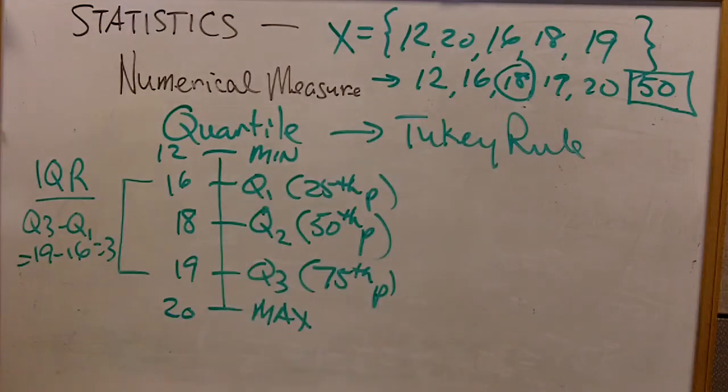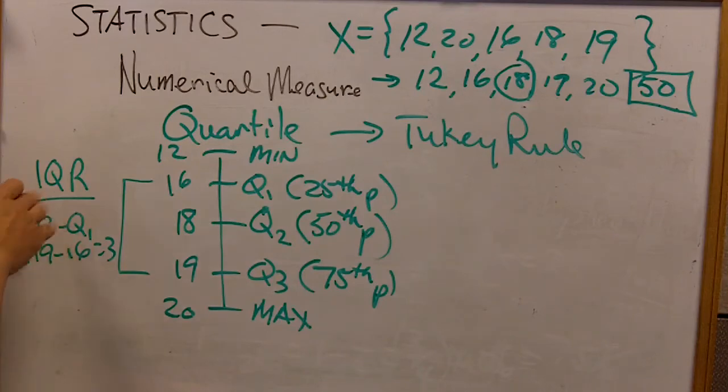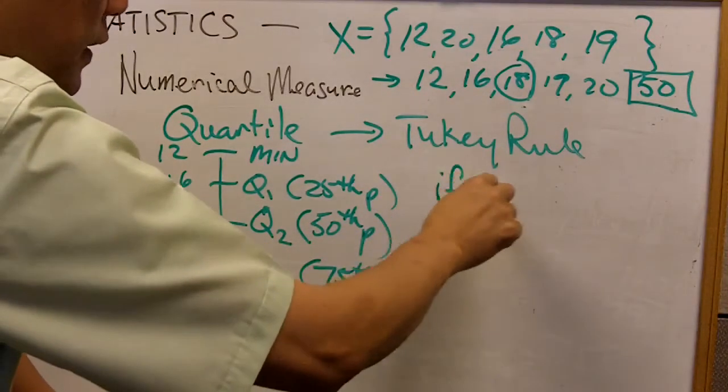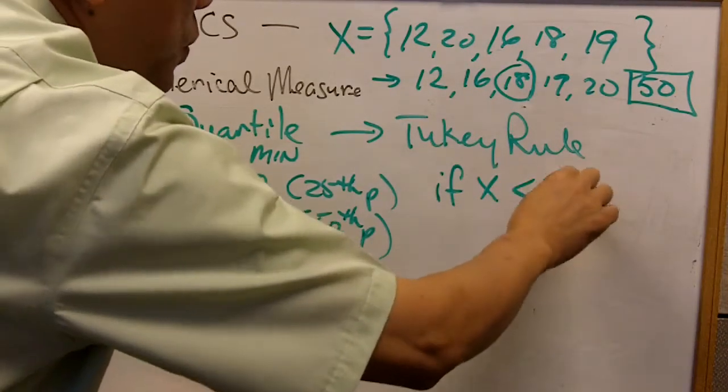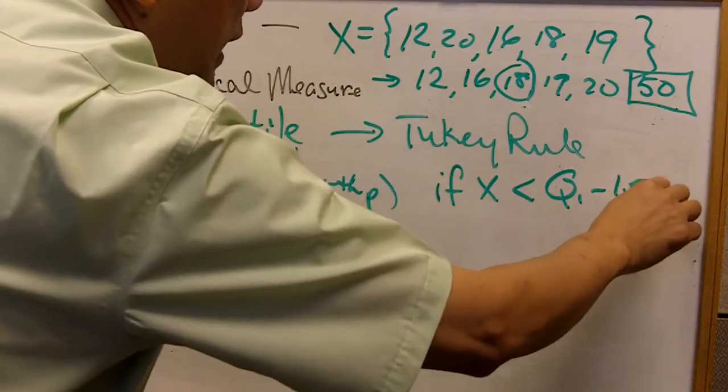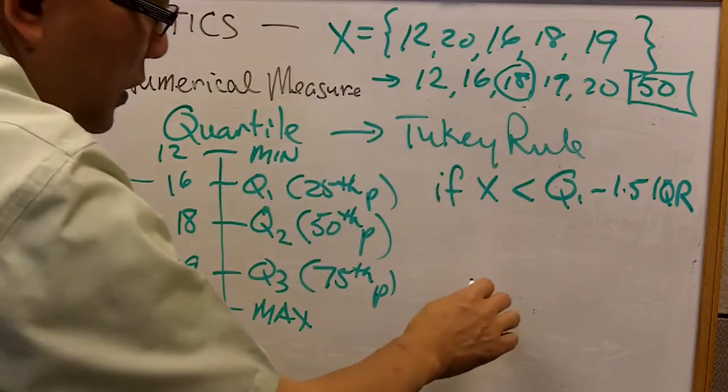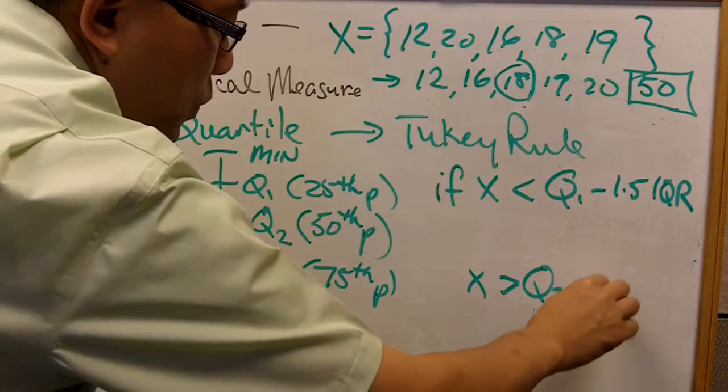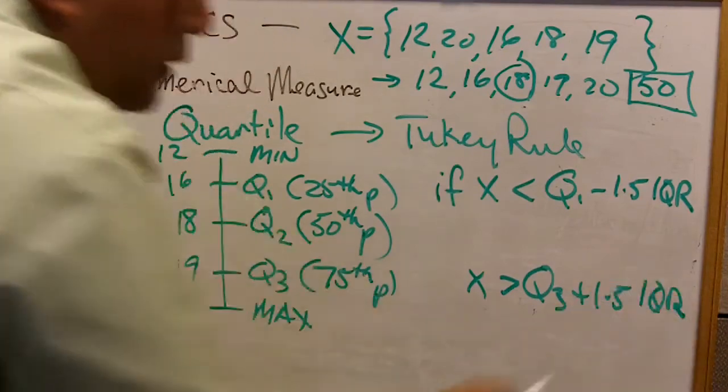So, how do we use the Tukey rule? The Tukey rule is set up in such a way that we combine the five-point summary and utilize the IQR. The Tukey rule says: if any value is less than Q1 minus 1.5 times IQR, then it's an outlier. Or, if X is greater than Q3 plus 1.5 times IQR, it's also an outlier.